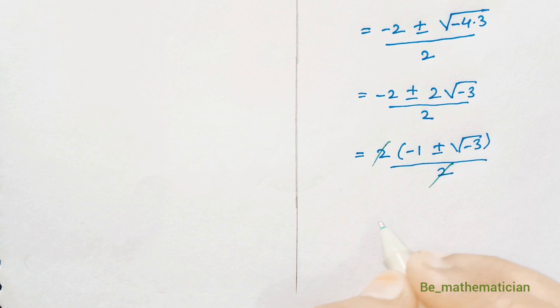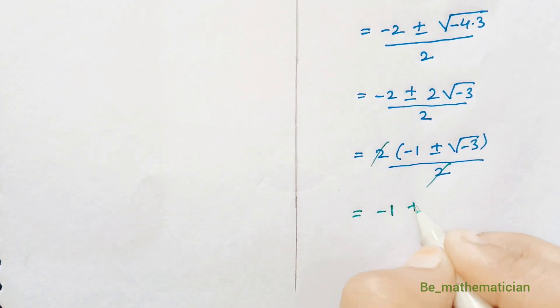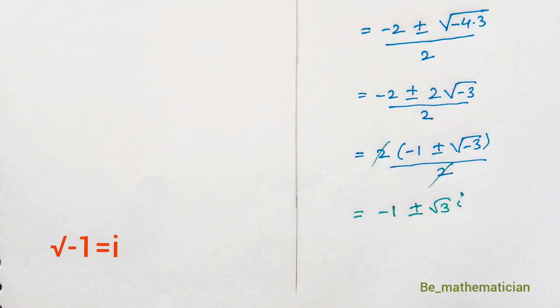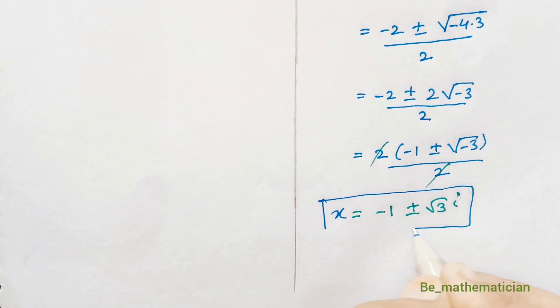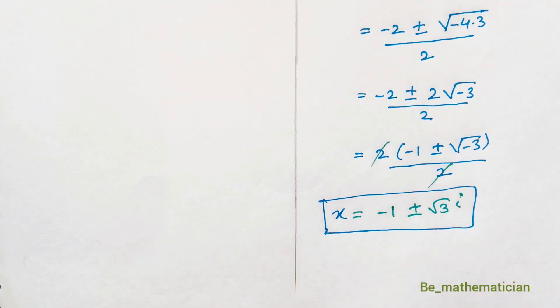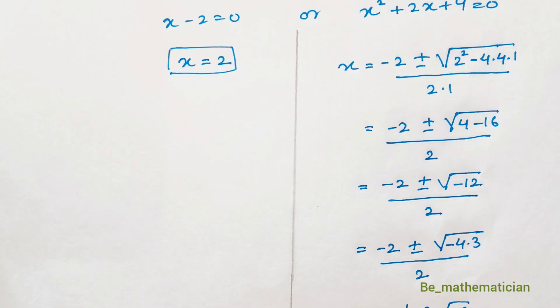So remaining will be minus 1 plus or minus root of minus 3. Square root of minus 1 is imaginary number that is iota or i. These are the 2 imaginary solutions of x. And previously we got x is equal to 2.